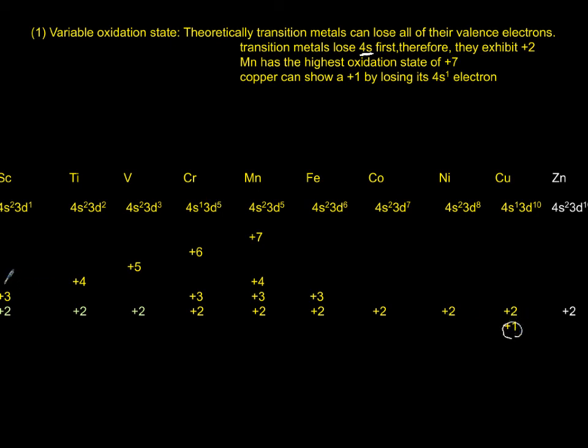So if you go from scandium—scandium nowadays we call it a typical transition metal. Back in the days it was just like zinc, we didn't call it transition metals. Now we are including. If you look at scandium up to manganese, they increase in losing valence electrons. Manganese shows the maximum and then there is a decline.